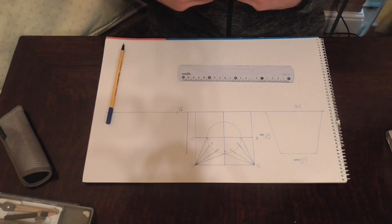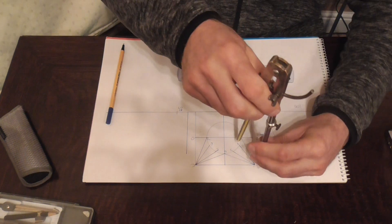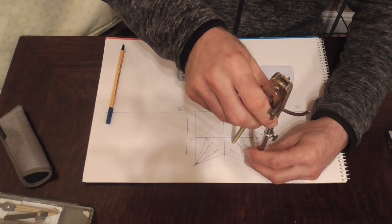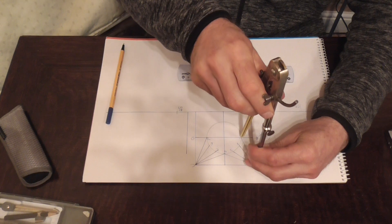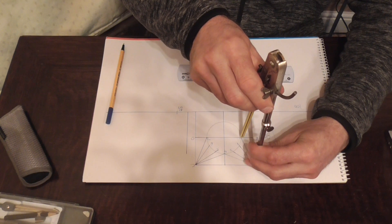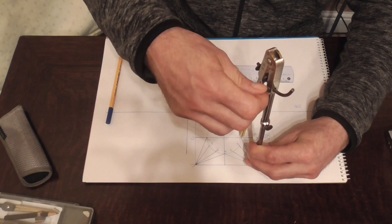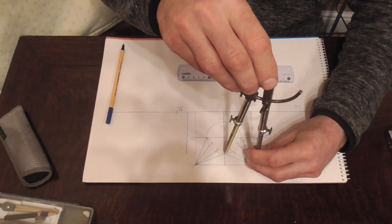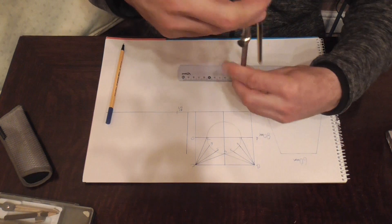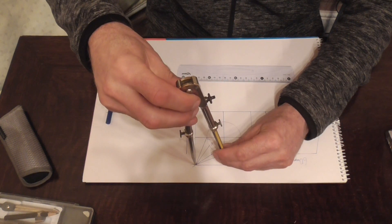Next to that we open our dividers up to B1. B1 and B4 are the same. And so is C4 and C7.